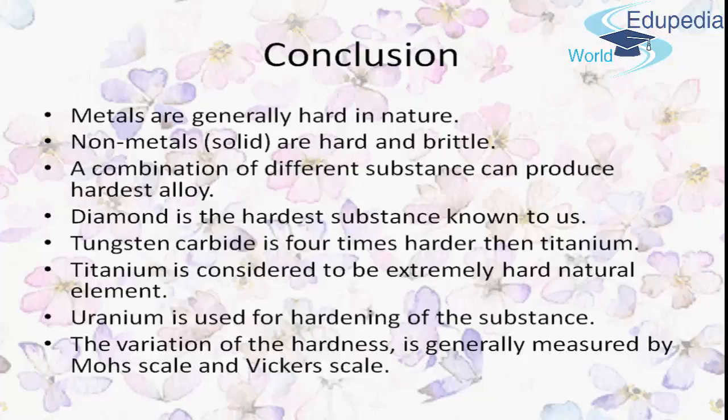Although not as hard as titanium, uranium as a metal alloy is useful for its hardness and density. Uranium can be made into alloys with titanium and molybdenum for use as armor-piercing projectiles, as their mass and physical properties allow them to penetrate armor better and at longer distances. When tungsten rounds hit a target they become blunt, wasting energy by deforming, whereas uranium's self-sharpening property gives it a higher penetrating advantage. Overall, the variation of hardness is generally measured using the Mohs scale and Vickers scale in the metal industry.